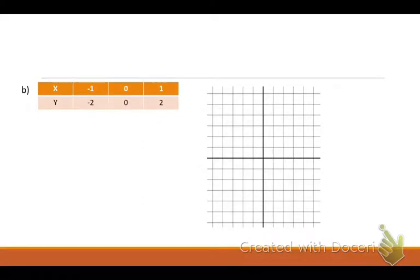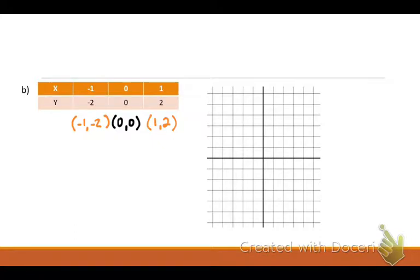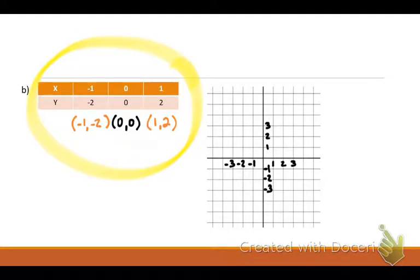For problem B, let's do another example. The points are: negative one and negative two; zero and zero; one and two. I want you to label the graph on your own and try to plot those three points. When you're finished, check with your partner. Notice I only labeled up to three on my axes — you don't have to go all the way to six or seven if your points don't go that far.